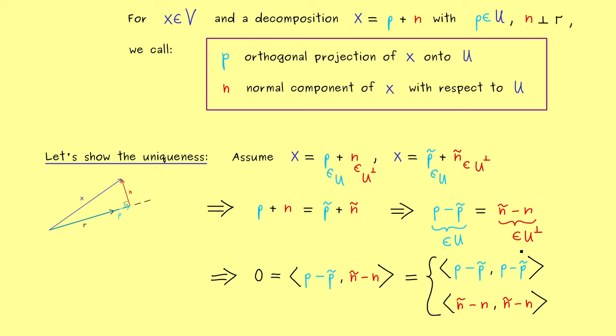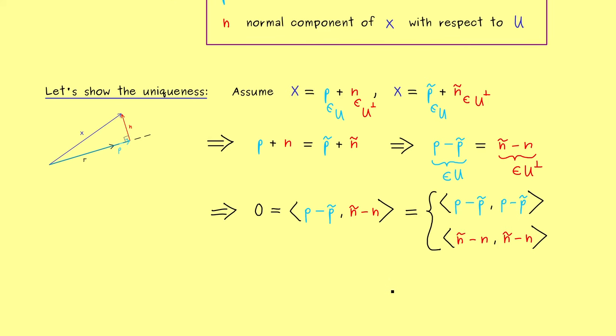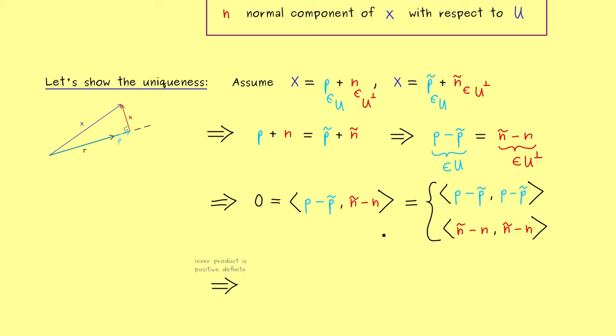And essentially we just need the first property of the inner product, which states that it is positive definite. It implies, if we put the same vector left and right in the inner product and we get out zero, then this vector has to be the zero vector. So we get p - p-tilde is equal to the zero vector and n-tilde - n. And hence the decomposition was the same all along.